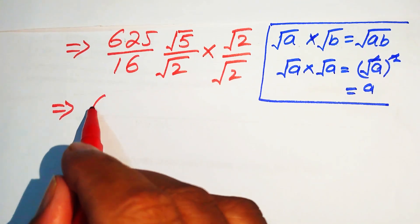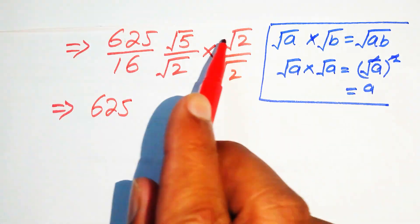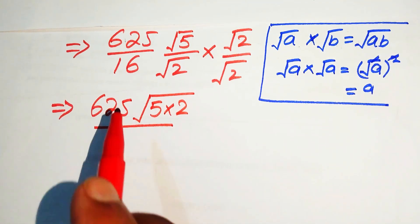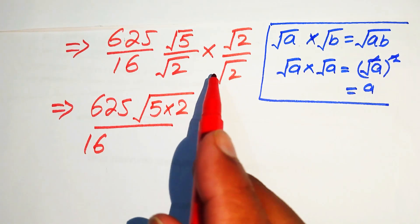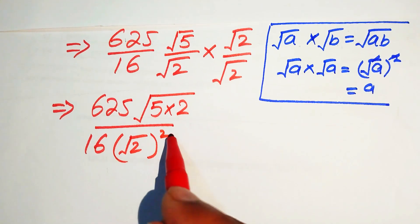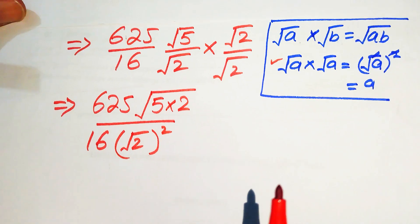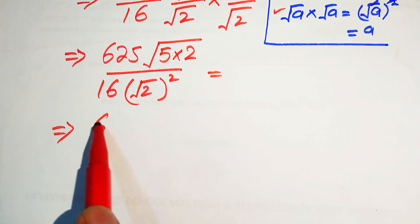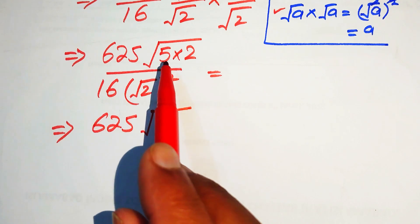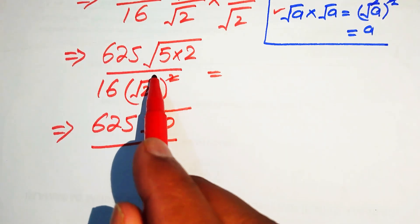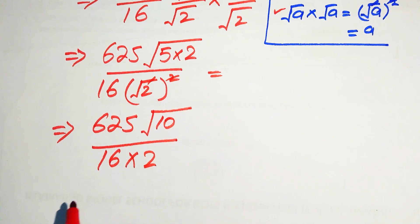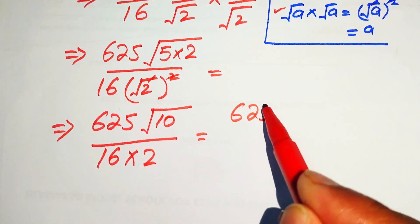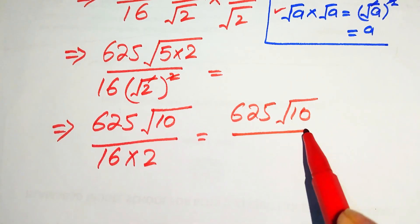In the numerator, we combine the radicals to get the square root of 5 times 2, which is the square root of 10. The denominator has 16 and the square root of 2 squared, which gives us 2. So we get 625 times the square root of 10, divided by 16 times 2, which is 32.